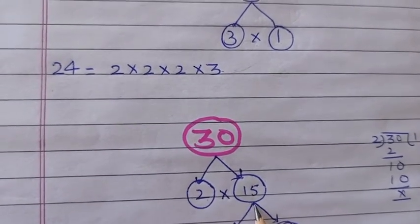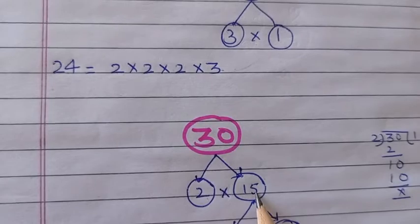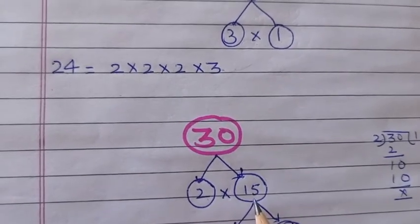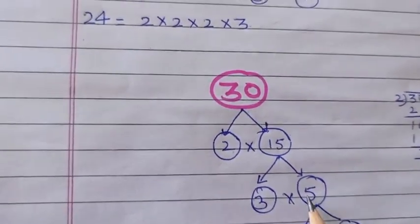Then we will check it with 3. Can 3 divide? Or you can say, in the 3 table. Yes, 3 × 5 is 15.